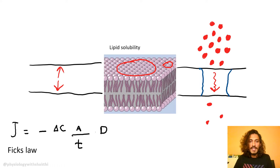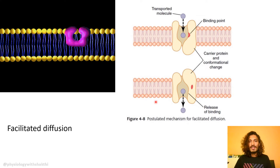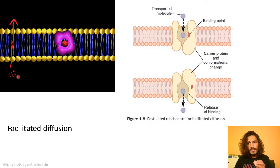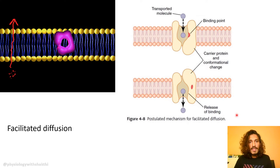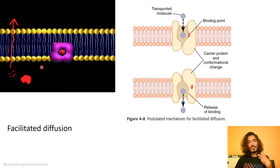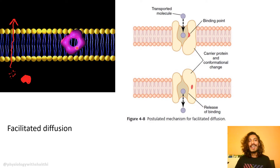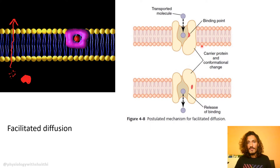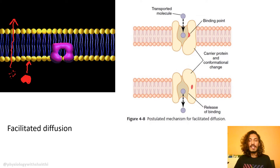Now that we've discussed simple diffusion, let's move on to facilitated diffusion. Small particles that are liposoluble can easily diffuse through the membrane. But if they are large, even if liposoluble, it will be more difficult. So large substances moving along the concentration gradient need a carrier. You can see how the carrier works — a conformational change moves the substance to the opposite side. This is facilitated diffusion.